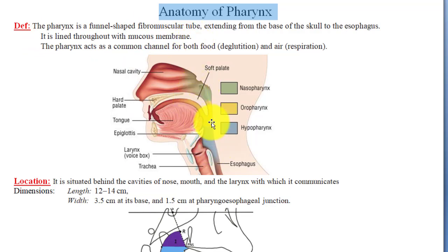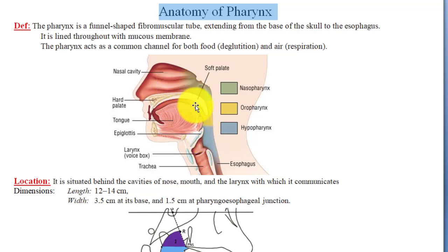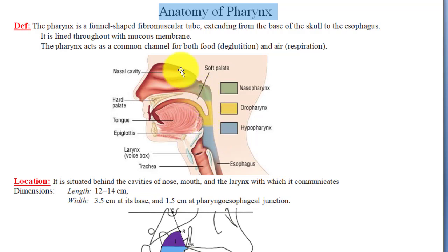The pharynx is lined throughout with mucous membrane. It acts as a common channel for both food — that is deglutition — and air — that is respiration. Through the pharynx, air enters the respiratory tract and food enters the esophagus. It is a common passage for both food and air.